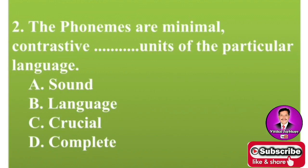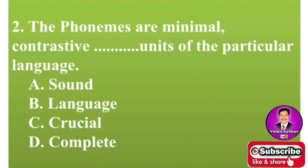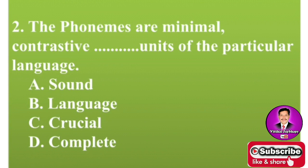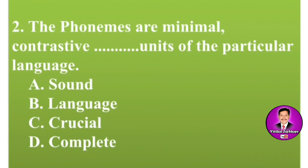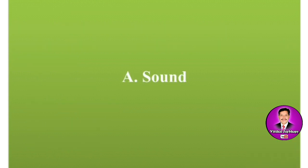Next MCQ: The phonemes are minimal, contrastive, dash-dash units of a particular language. Fill in the blank. Options are A: sound units, B: language units, C: crucial units, D: complete units. Read the phoneme chapter for this definition. The correct answer is A — sound units.